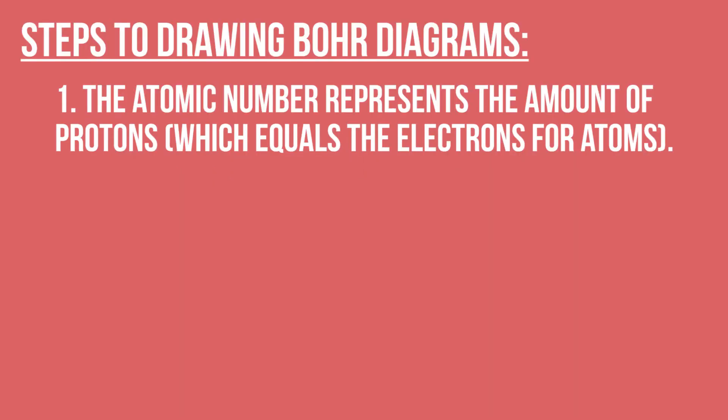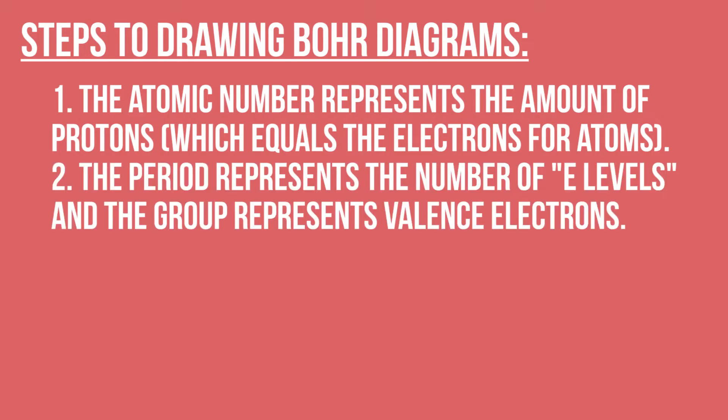The steps to drawing Bohr diagrams are first, the atomic number represents the amount of protons, which when we're talking about atoms equals the electrons. The period represents the number of energy levels, and the group represents the valence electrons.